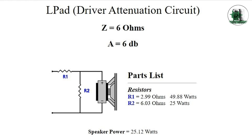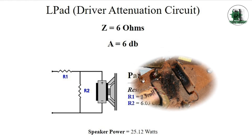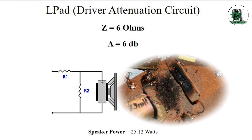As you can see, we need to define the maximum allowed power for each resistor. The input power is divided between the resistors. If we don't know their allowed power and choose low-power resistors, they may be destroyed at high sound levels from the amplifier.